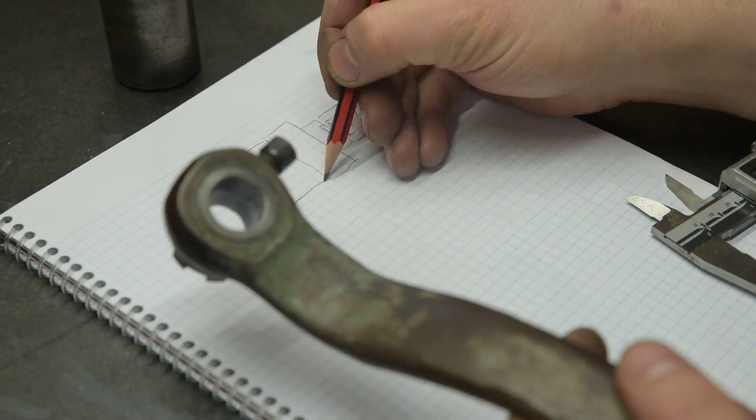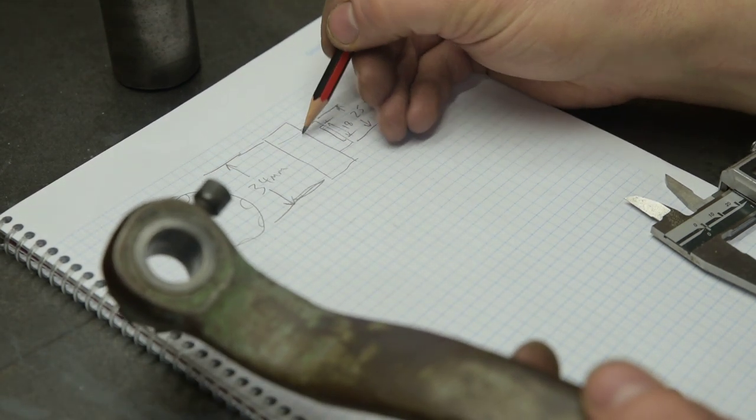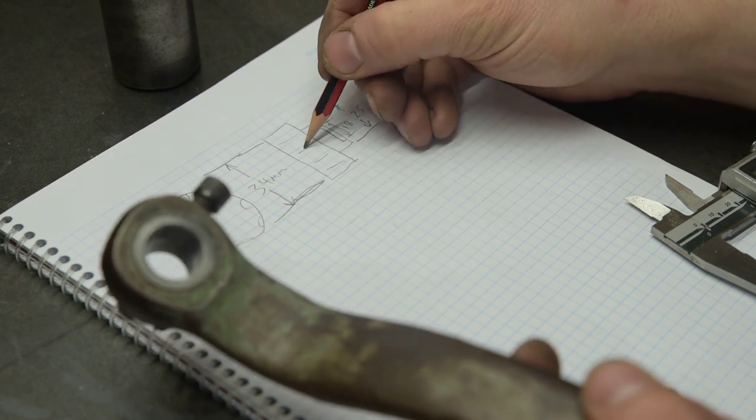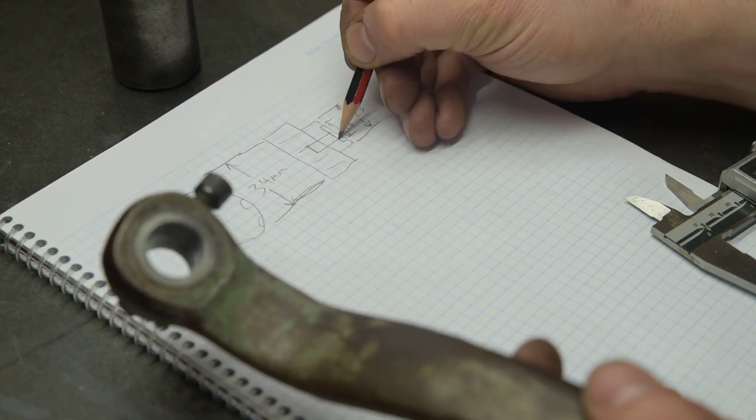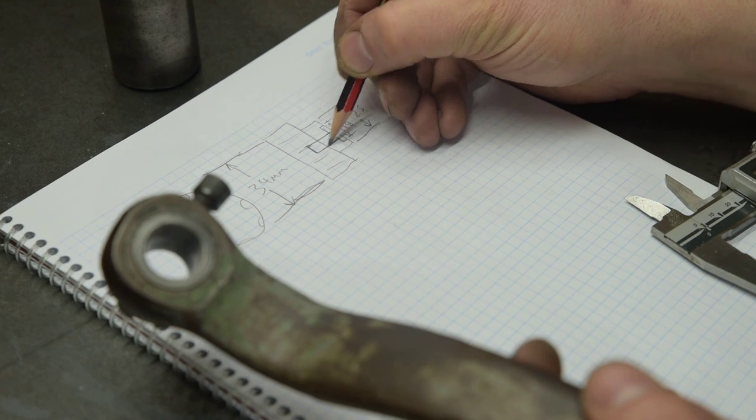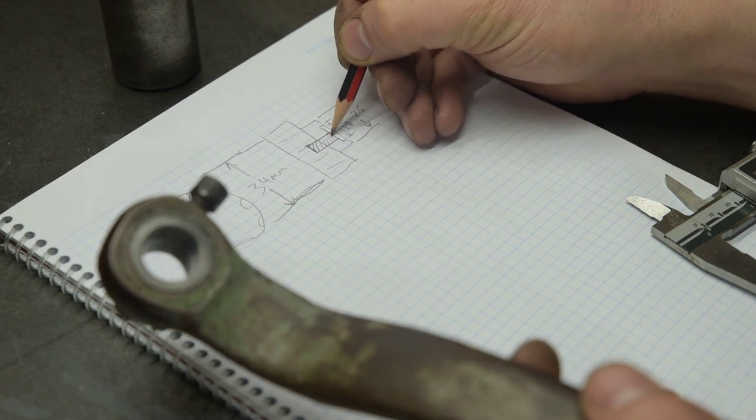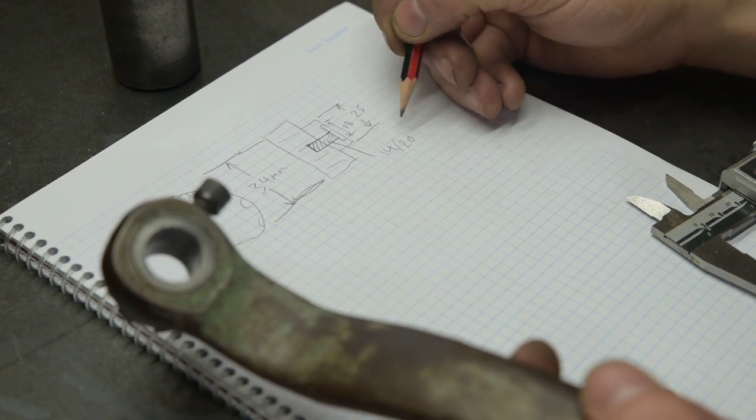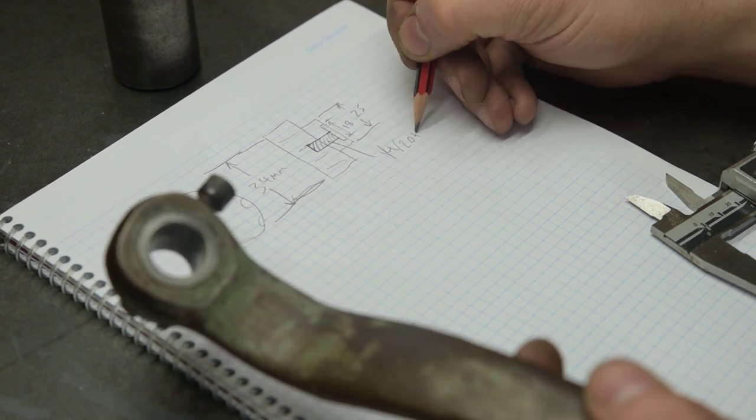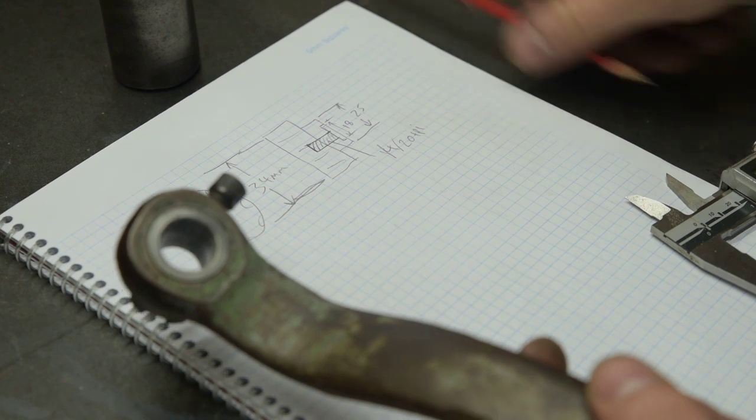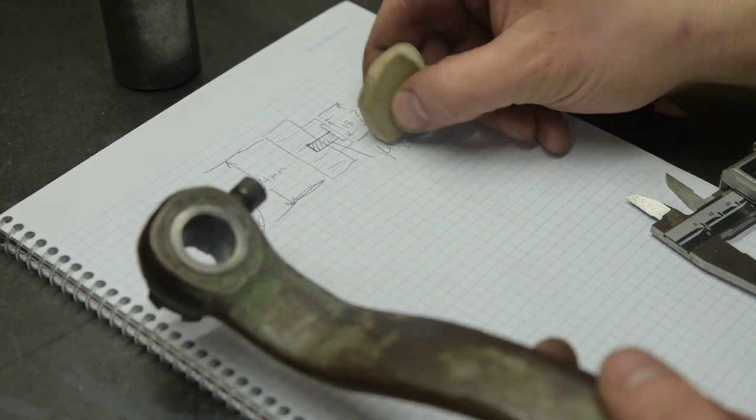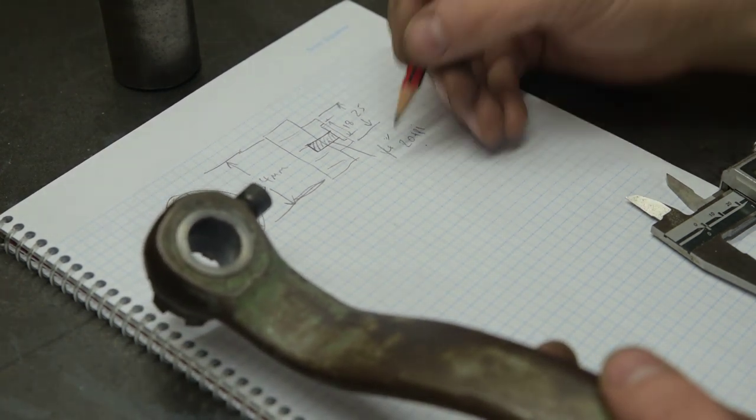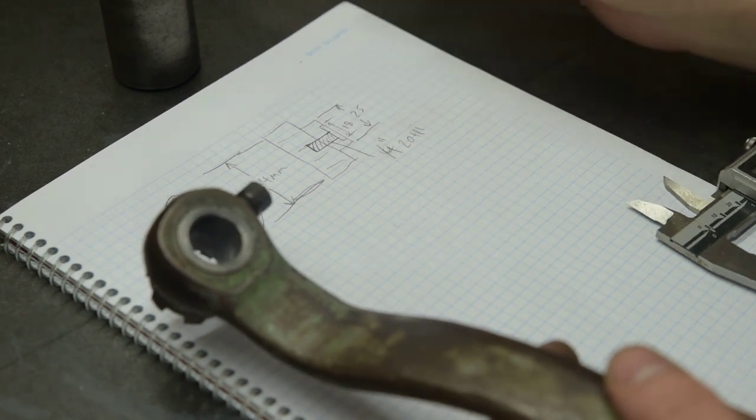I said that was going to be 34. This is going to have flutes, it's going to have a quarter 20 blind tapped hole up the inside as well. Quarter inch, 20 TPI.